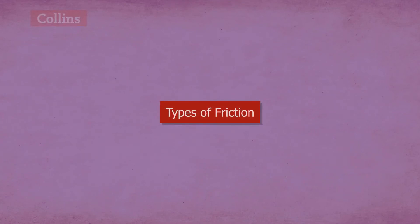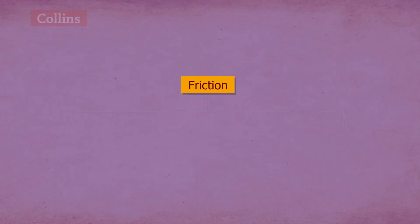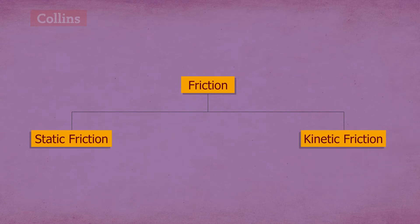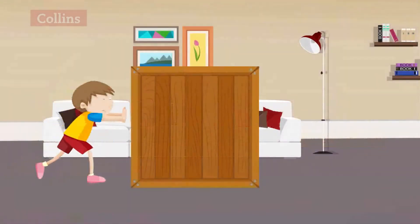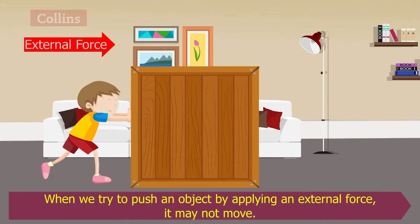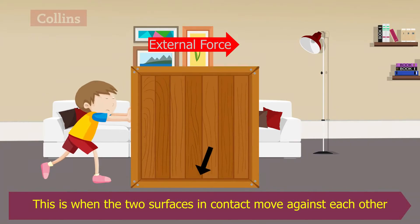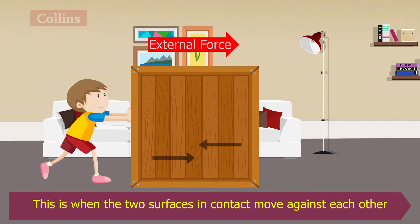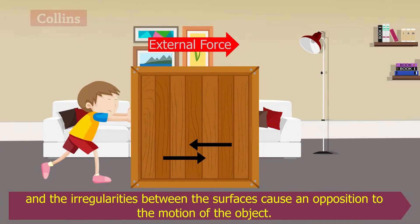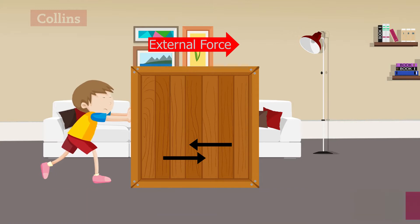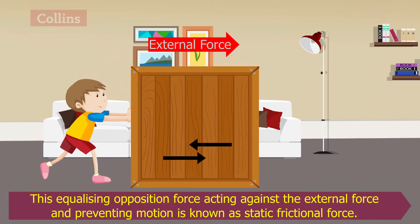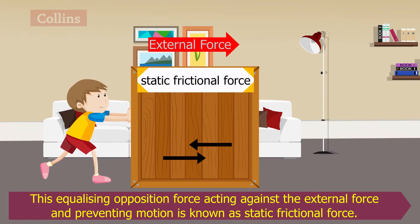Types of friction. There are two types of friction: static friction and kinetic friction. When we try to push an object by applying an external force, it may not move. This is when the two surfaces in contact move against each other and the irregularities between the surfaces cause an opposition to the motion of the object. This equalizing opposition force acting against the external force and preventing motion is known as static frictional force.